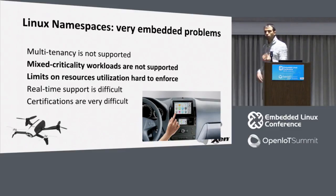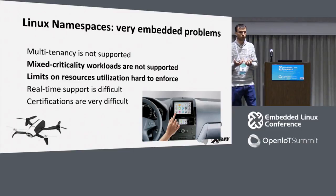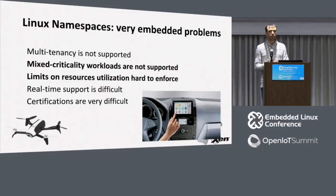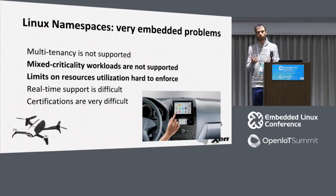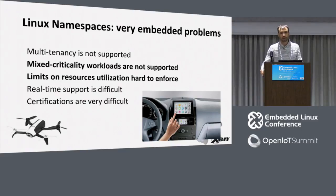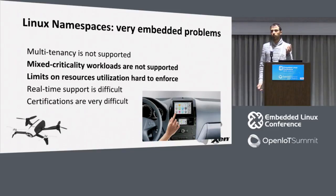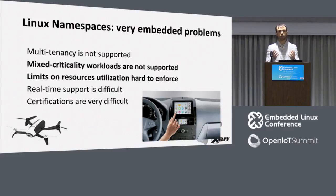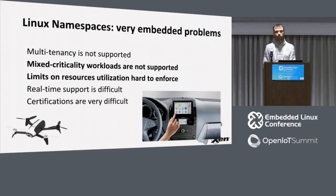If you cannot trust the isolation enforcement, then you cannot really use Linux namespaces to run applications that have different criticality levels. Very often in embedded, IoT, or automotive and transportation industries, you have a very critical application and a far less critical application running on the same board. Let me give some examples. One example is the infotainment system on a car.